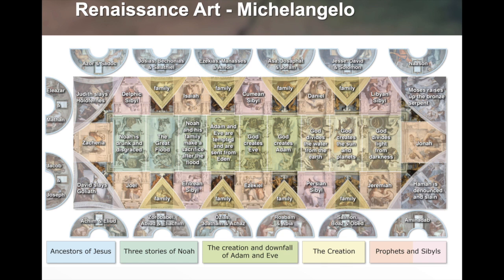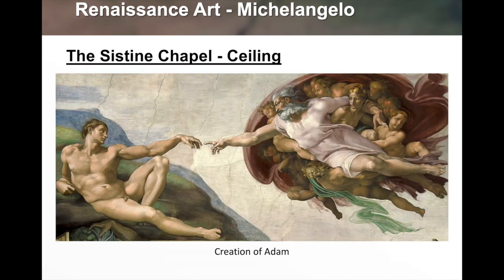Here's a diagram of the Sistine Chapel scenes: God creates Adam, God creates Eve, Adam and Eve are tempted and sent out of Eden, Noah and his family make a sacrifice after the flood, the great flood, Noah is drunk and disgraced. In the corners you see Moses raising up the bronze serpent, and along the sides you see figures like Salmon, Boaz, Obed, Jacob, Joseph, Jesse, David, and Solomon. On another side: God divides the water from the earth, God creates the sun, God divides light from darkness, and Jonah.